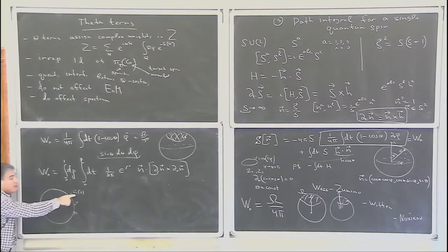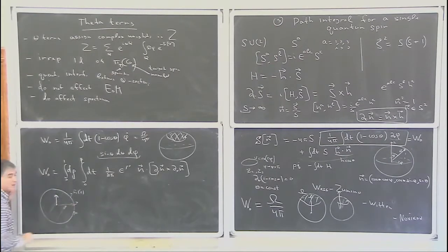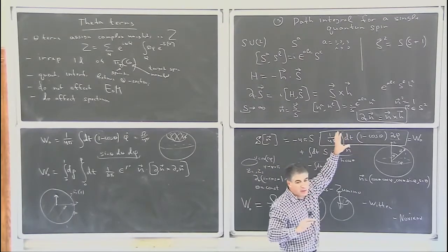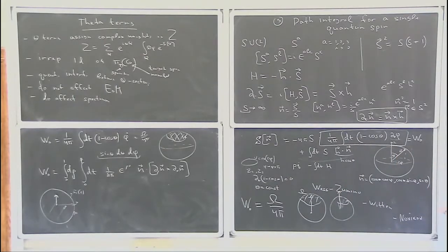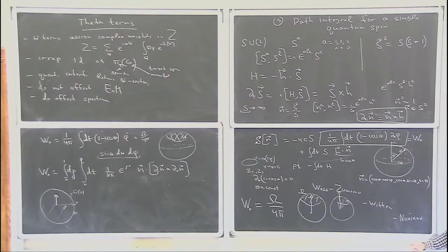I can extend this inside in a smooth way — this contour can always be contracted since pi_1(S^2) = 0, so there is no topological obstruction. The claim is: if you take the integral over the disk of (1/8pi) epsilon_{mu nu} N dot (partial_mu N cross partial_nu N), it gives the same value as the original W_0 — with a small footnote we will explain. And the variation of this action depends only on the physical values of N at the boundary, not on the extension chosen.